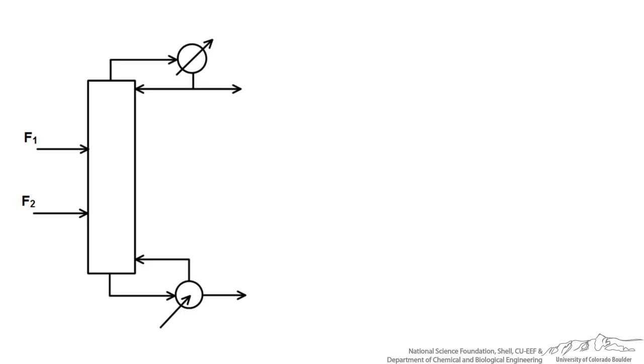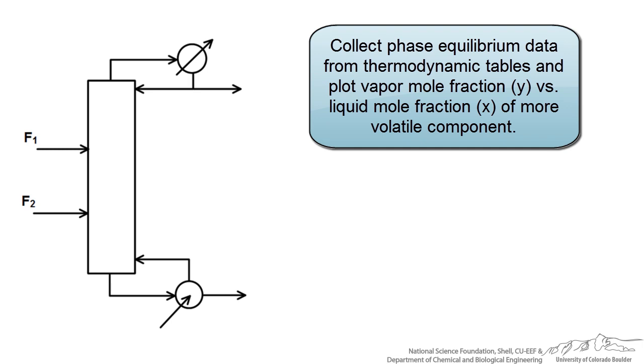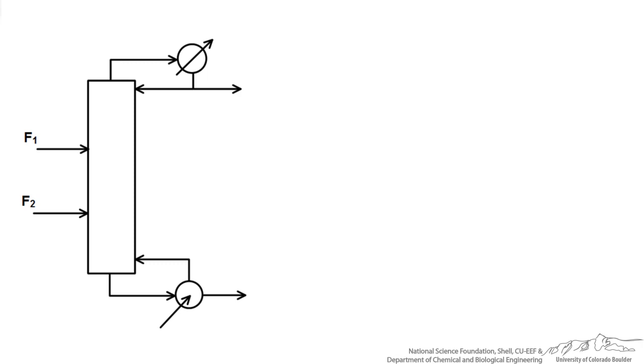In order to determine the amount of stages that we are going to use to achieve this separation we could use a McCabe-Thiele diagram to do this. This means we would need to collect phase equilibrium data for our acetone and methanol system and plot them on a y versus x mole fraction diagram.